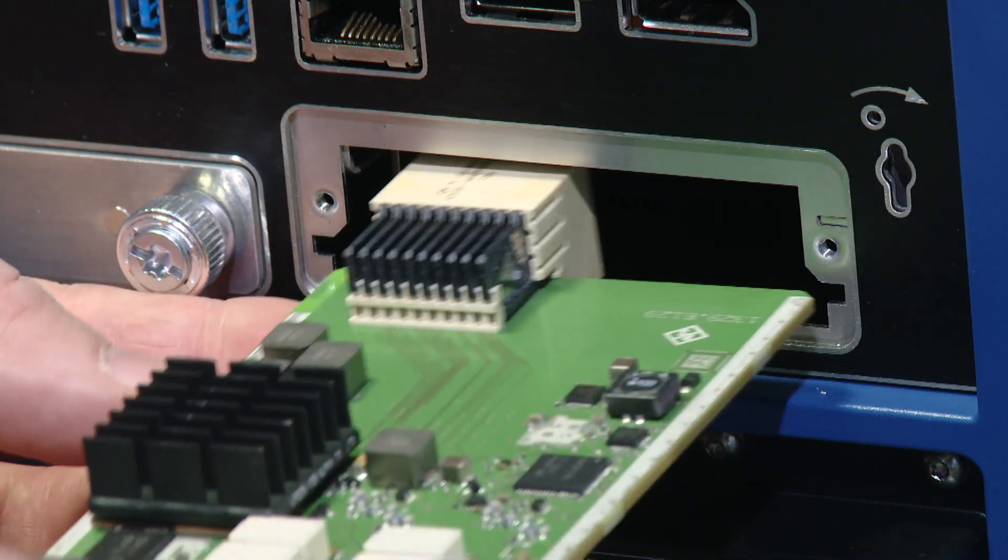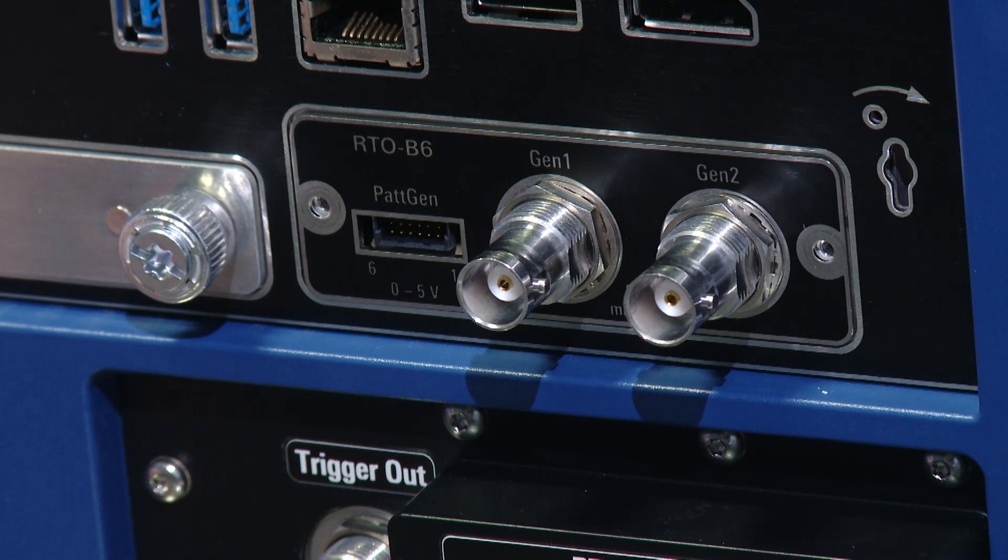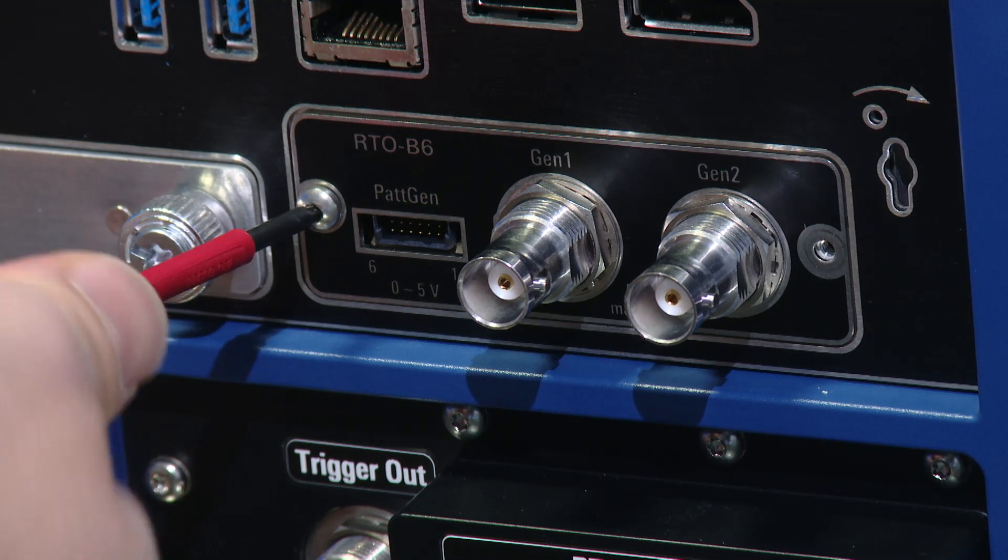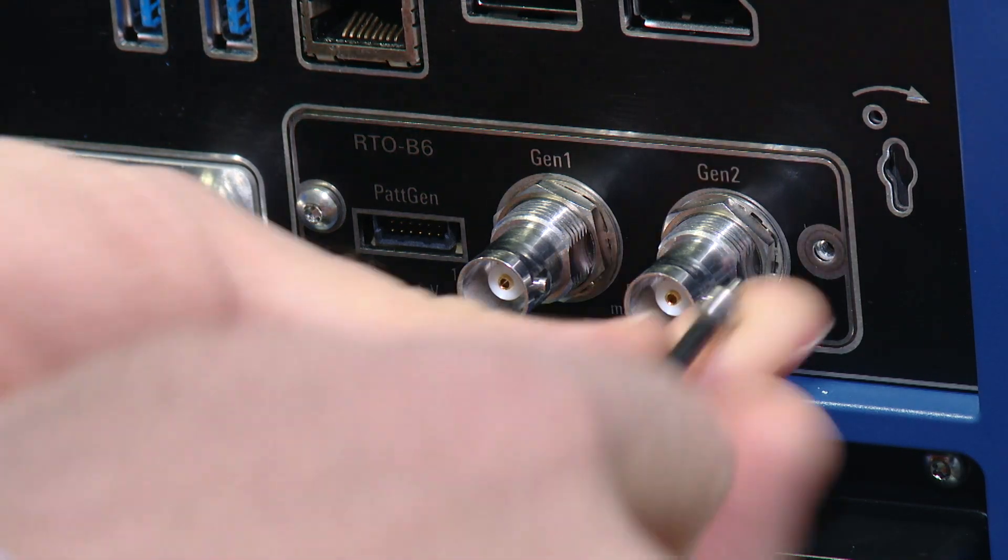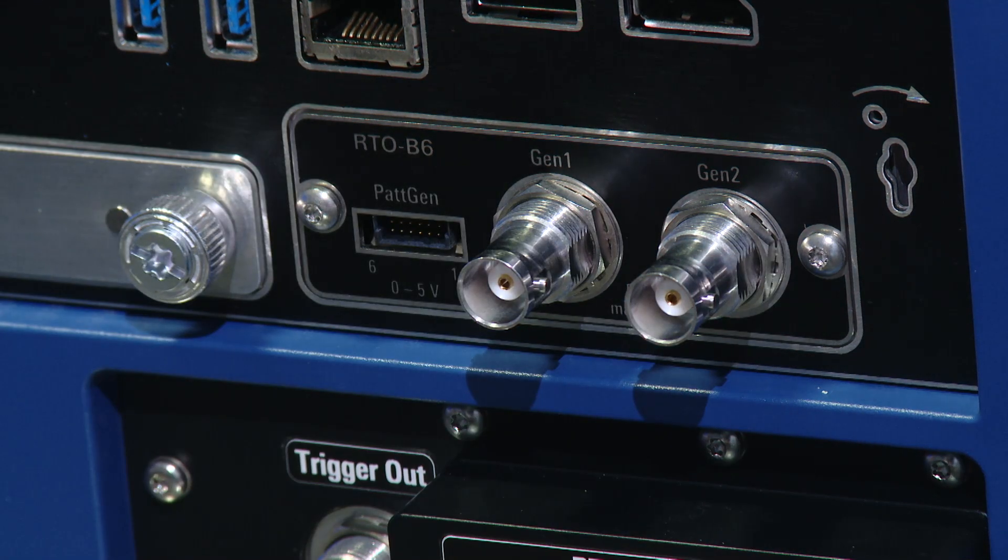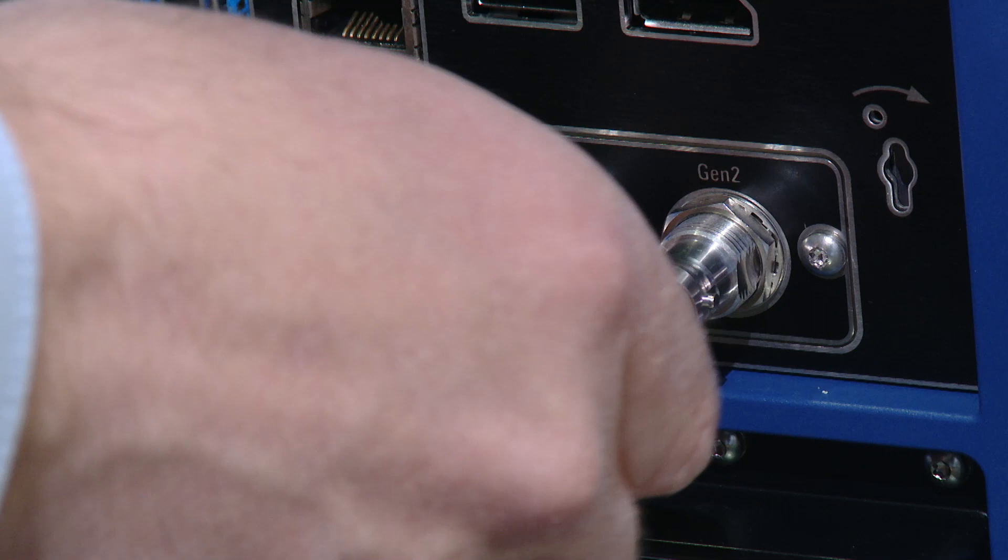So you take the module I just showed you and slide it in at the back of the instrument. Then you have to tighten these two screws, one on the left, one on the right and that's it. And I also connect the output generator one to show you how you can use it.